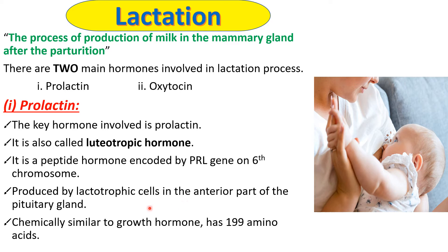Lactotropic cells of the adenohypophysis — that is, the anterior part of the pituitary gland — secrete prolactin. If we see the chemical nature, prolactin is almost similar to the growth hormone. As the growth hormone promotes cell division and cell differentiation, prolactin also works towards promotion of growth. Prolactin is a protein hormone comprising 199 amino acids.